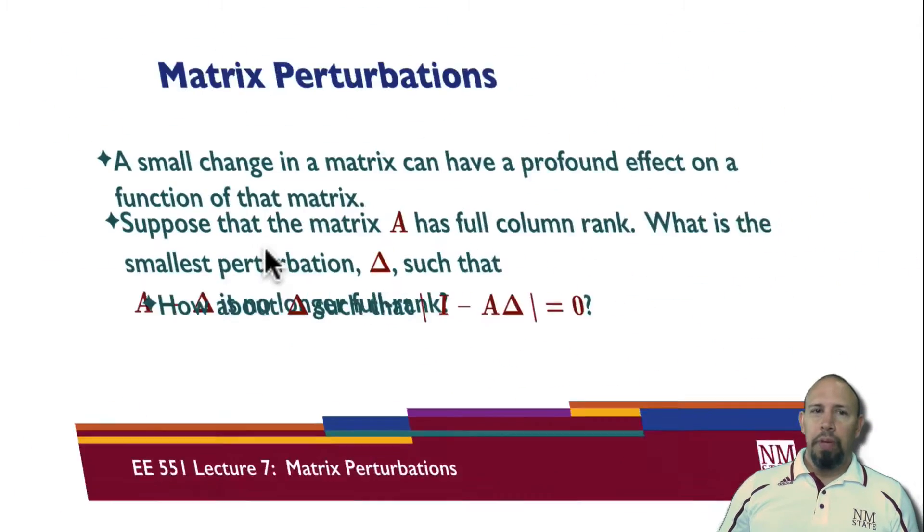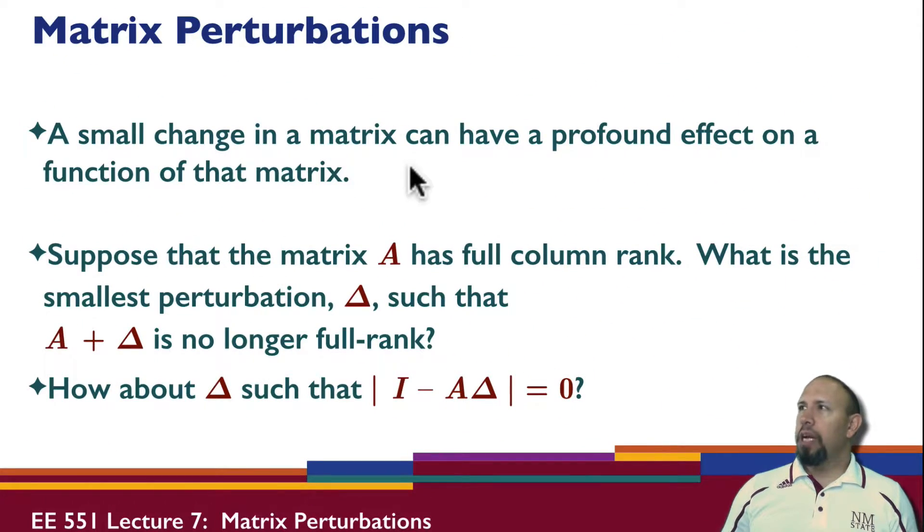So matrix perturbations. A small change in the matrix can have a profound effect on the function of that matrix. And so there are two specific problems we're going to look at. The first is additive perturbation. Suppose the matrix has full column rank. What is the smallest perturbation such that when I add that perturbation to my matrix, then the matrix is no longer full rank? We can lose rank by adding.